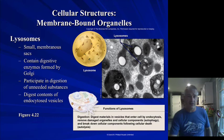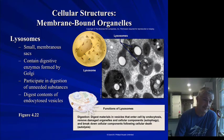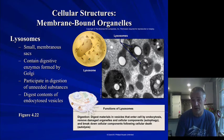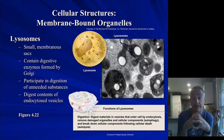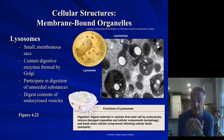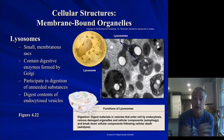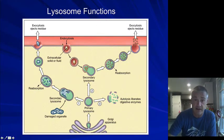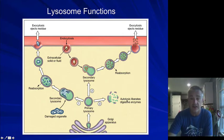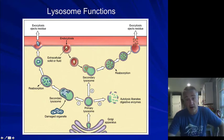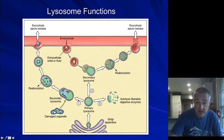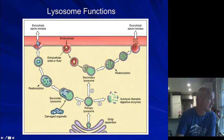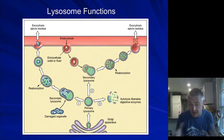Lysosomes are kind of like a digestive organ of the cell. They can take a number of things taken in by the cell and break them down — we have a lot of digestive enzymes contained in this organelle to keep the cell from digesting parts of itself. This is also involved in programmed cell death or apoptosis, where lysosomes open up and let those digestive enzymes take apart the cell. You can take something in from the outside, merge it with the lysosome, reabsorb what you need, and get rid of what you don't.